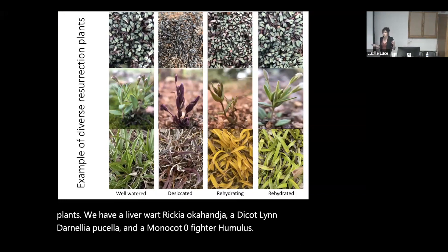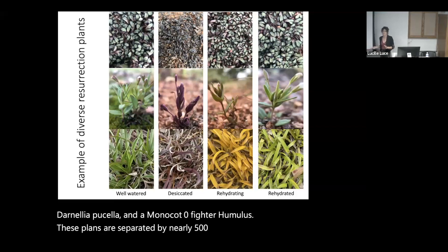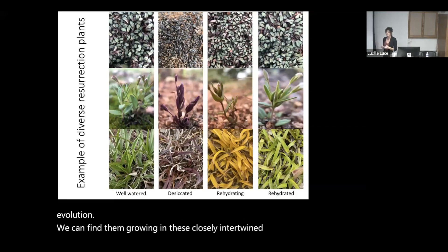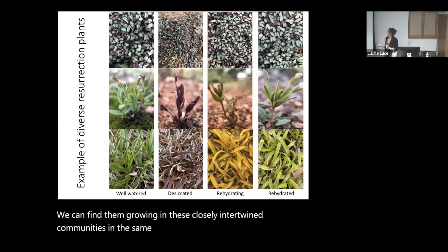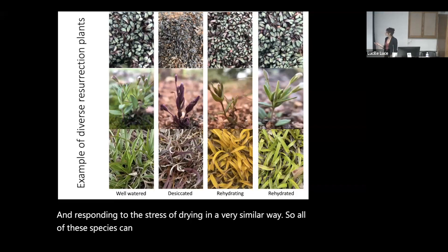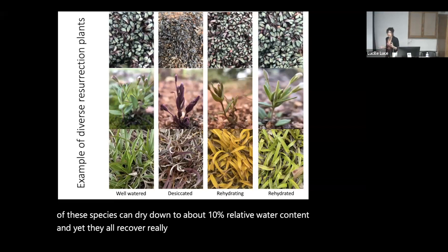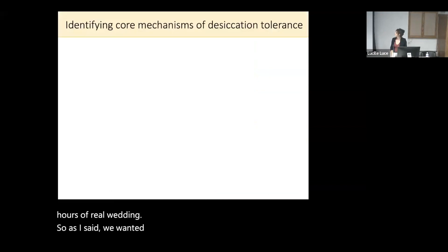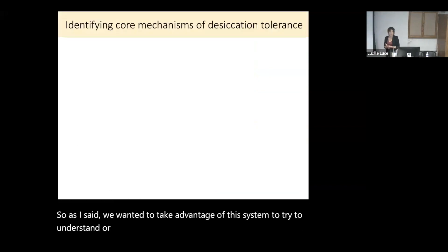These plants are separated by nearly 500 million years of evolution, yet we can find them growing in closely intertwined communities in the same habitat, responding to the stress of drying in a very similar way. All of these species can dry down to about 10% relative water content, and yet they all recover really beautifully within about 24 to 48 hours of rewetting.